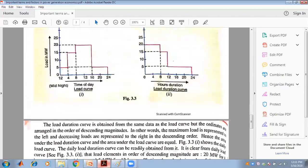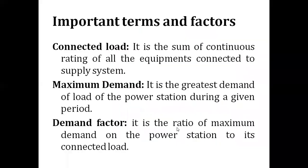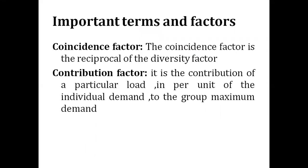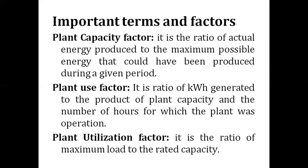We have now understood the different factors related to economic power generation. These include: connected load, maximum demand, demand factor, average load, load factor, diversity factor, and coincidence factor. The coincidence factor is the reciprocal of the diversity factor. The contribution factor is the contribution of a particular load in per unit of the individual demand to the group maximum demand. Plant capacity factor, plant use factor, and plant utilization factor have also been covered.